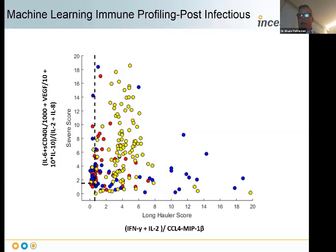In newer algorithms used to differentiate between the other chronic inflammatory diseases, we've also called upon the severity index, which is interleukin-6 plus soluble CD40 ligand divided by 1000, plus VEGF divided by 10, plus 10 times interleukin-10 divided by interleukin-2 plus interleukin-8. Long haulers appear in yellow, ME-CFS in blue, and long Vax in red. They may share common cytokine patterns but are also easily differentiated in algorithms.